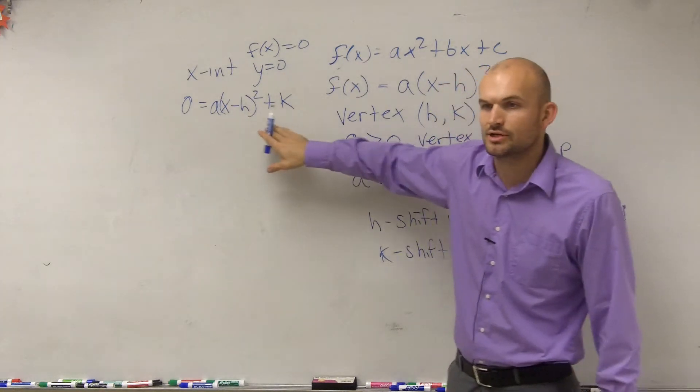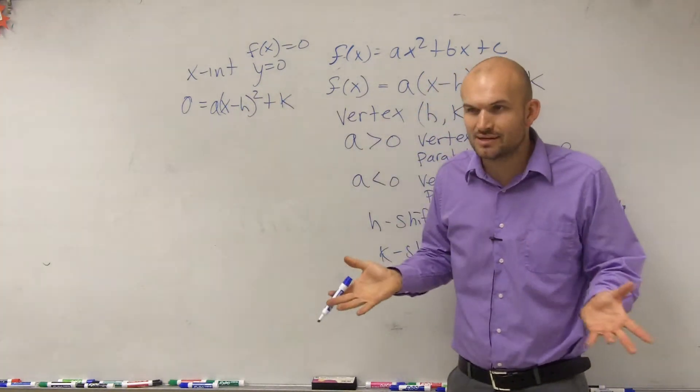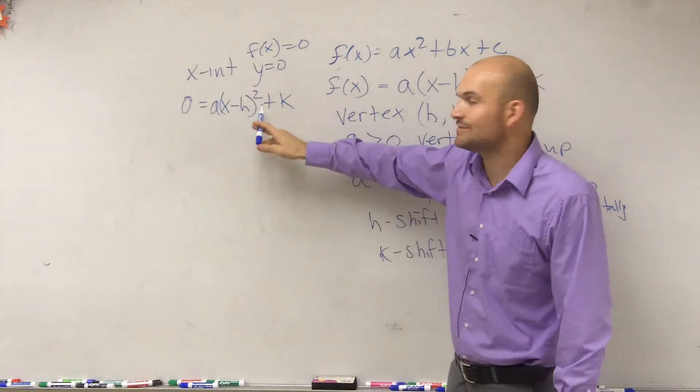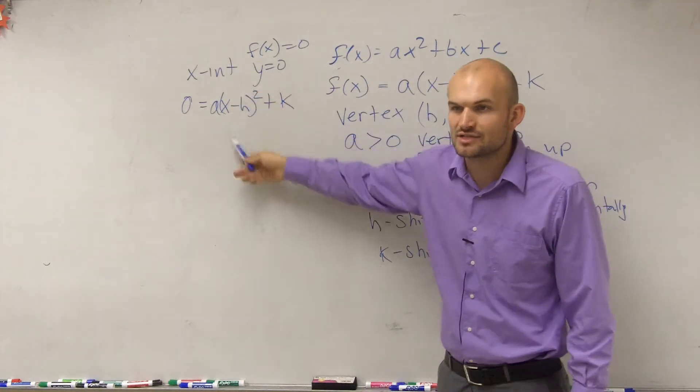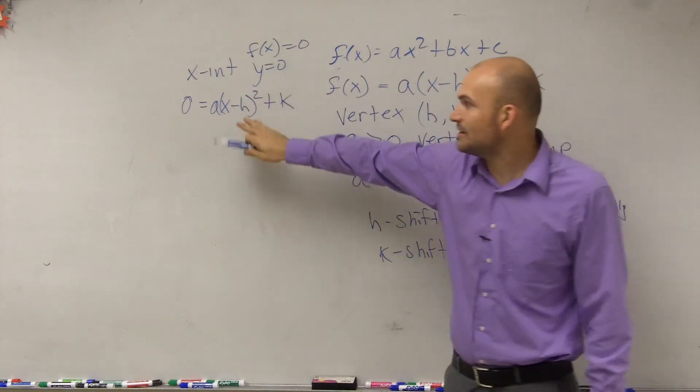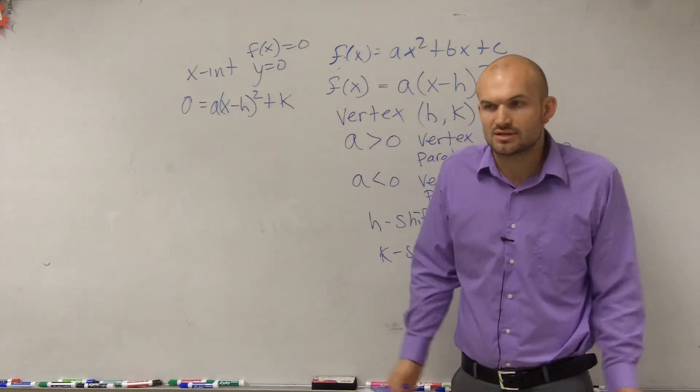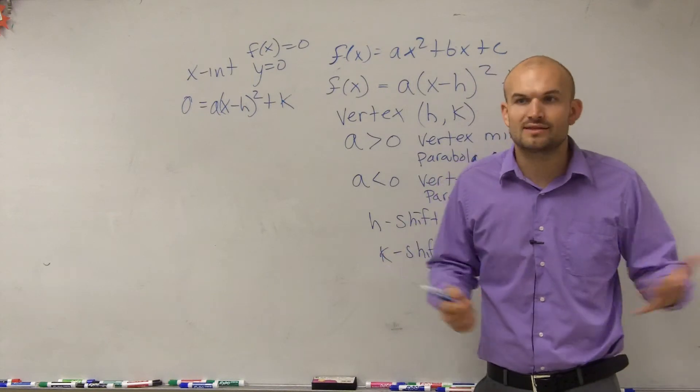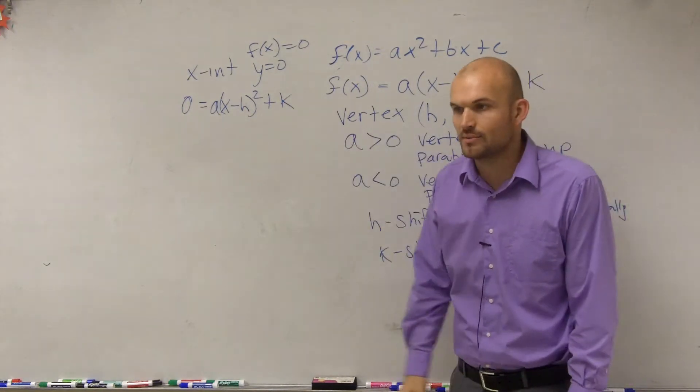So, ladies and gentlemen, to solve for x, would I have to do any factoring or anything? Imagine these are all going to be numbers. Your a, h, and k are all numbers. Do you have to do any more factoring? No. All you simply have to do is use inverse operations. Subtract the k to the other side, divide by a, square root, and add the h. It's very simple to solve it when you have it in this vertex form. You don't have to worry about factoring or the quadratic formula.